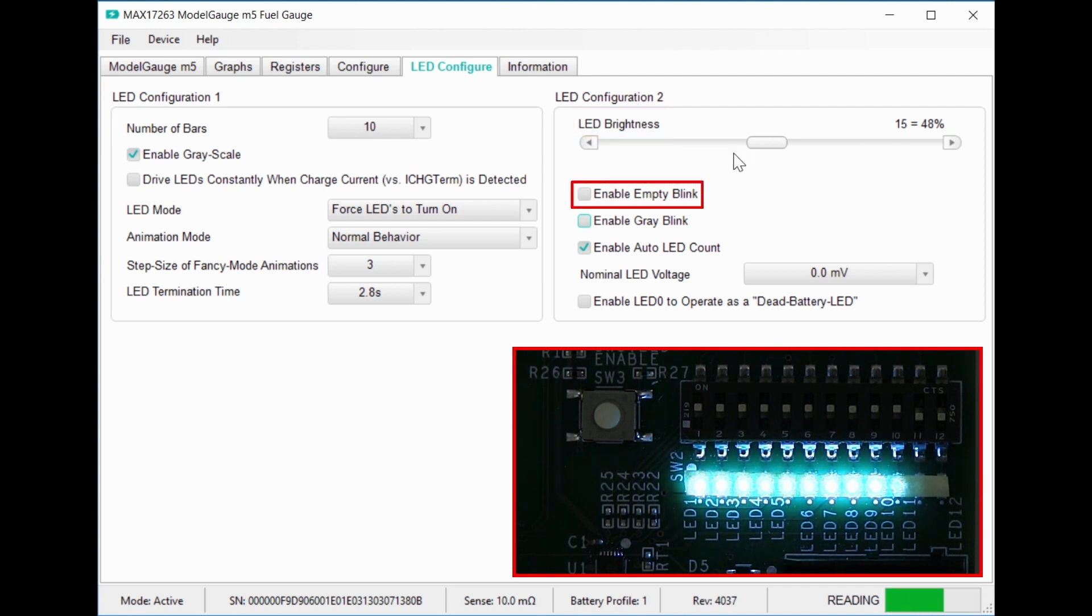The empty blink option will blink LED 0 instead of showing 0 bars so that you know you're getting a valid reading. The speed of all these blinking features is also controlled by the LED animation time.